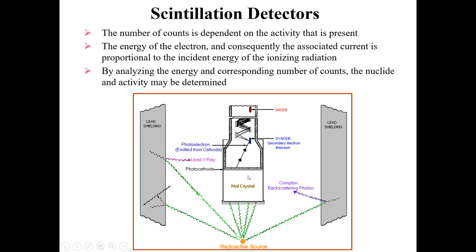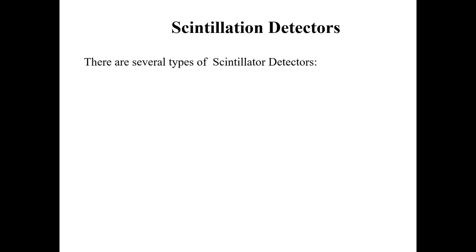By analyzing the energy and the corresponding number of counts, the nuclide and the activity may be detected. If you want to detect a particular nuclide emitted during a radioactive process, with the help of scintillation detectors we analyze the energy and corresponding count, which enables us to determine that particular kind of activity.